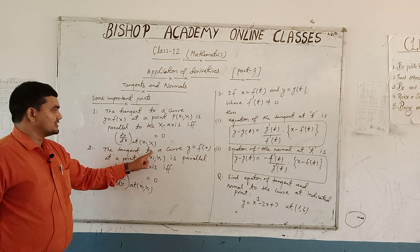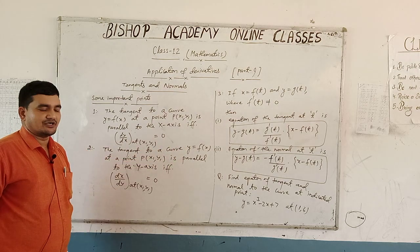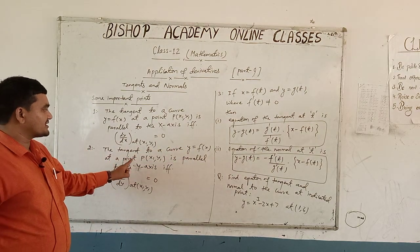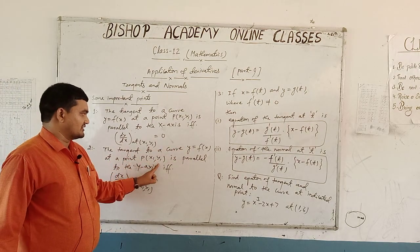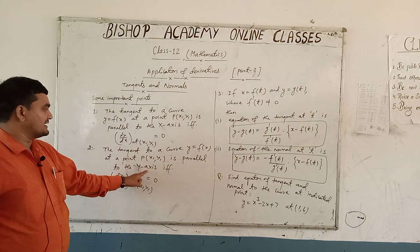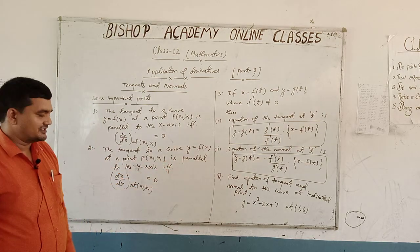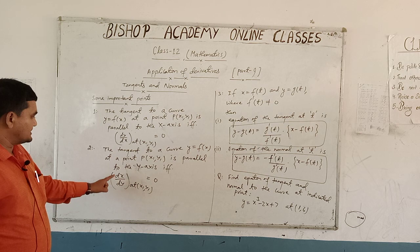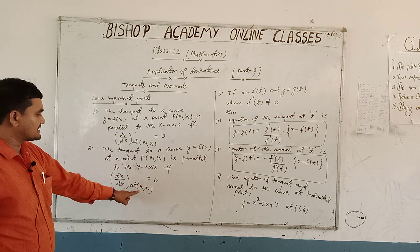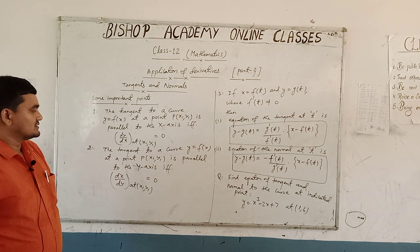The second point is: the tangent to a curve y = f(x) at a point (x₁, y₁) is parallel to the y-axis if and only if dx/dy at (x₁, y₁) is equal to 0.